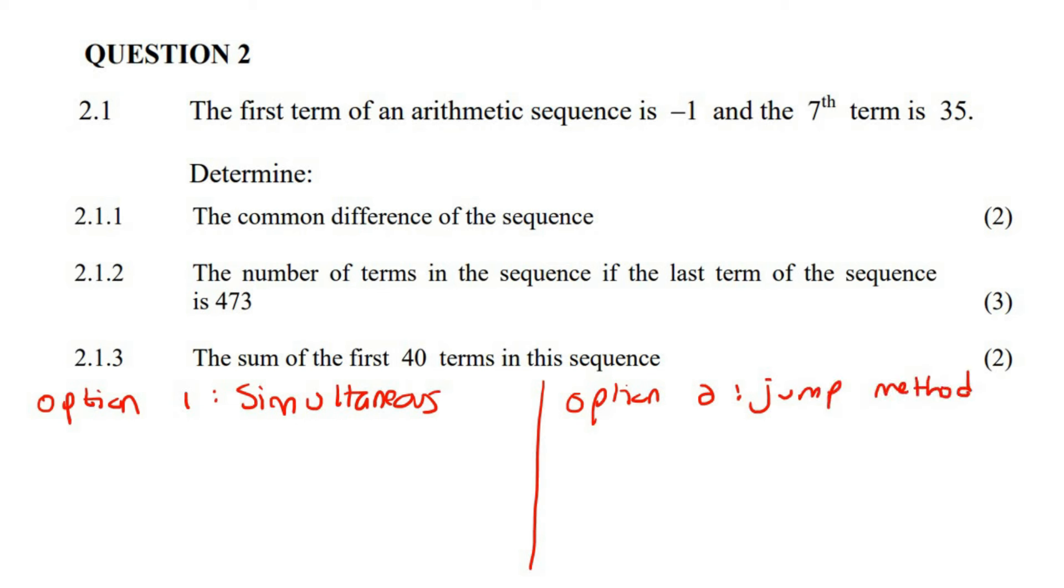And then option number 2 is the jump method. So with option number 1, they told us that the first term is negative 1, and the seventh term is 35. Now term 1 is just A, so we can say A is negative 1. And then for the arithmetic formula goes like this. So we're just going to fill this in now. They said term 7 is 35. Some learners get confused - where do we put the 7 and where do we put the 35? You've got to remember that the term number is what we call N, so that's the 7. And then the value of the term is 35, and that goes here.